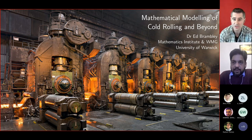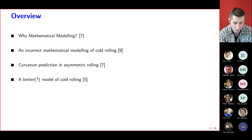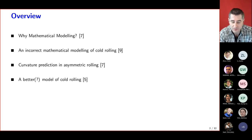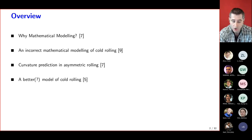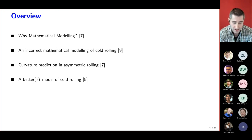Thank you very much, and thank you all for coming along. First of all, I want to convince you that there is a use for mathematical modelling in metal forming. Then I want to give you a relatively understandable derivation of a model of cold-rolling. And later on, we'll find out that actually it's wrong — so if you're feeling sharp, you might try to spot the deliberate mistake. Then we'll talk briefly about asymmetric rolling, and finally about a better model of cold-rolling, which is work in progress.